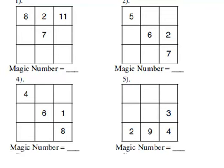Now you've got 8, 2 and 11. Now to get the magic number here you add 8 plus 2 plus 11. So the magic number for this one is 8 plus 2 is 10 plus 11 is 21.